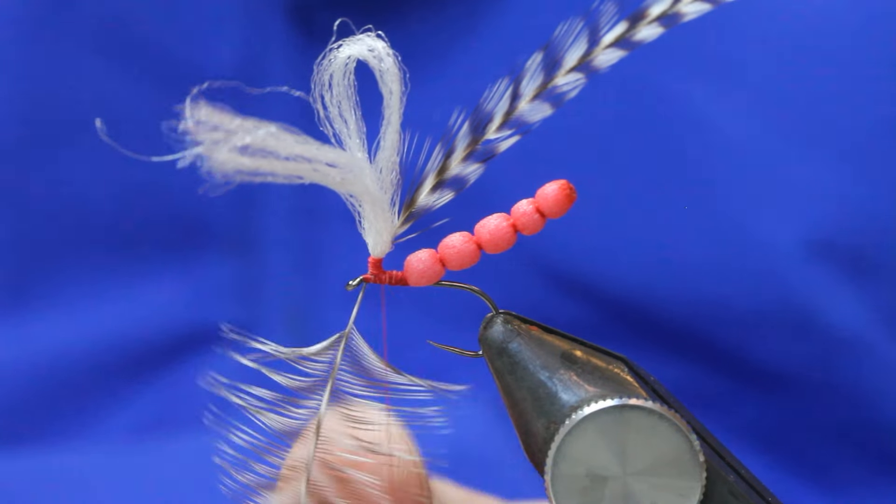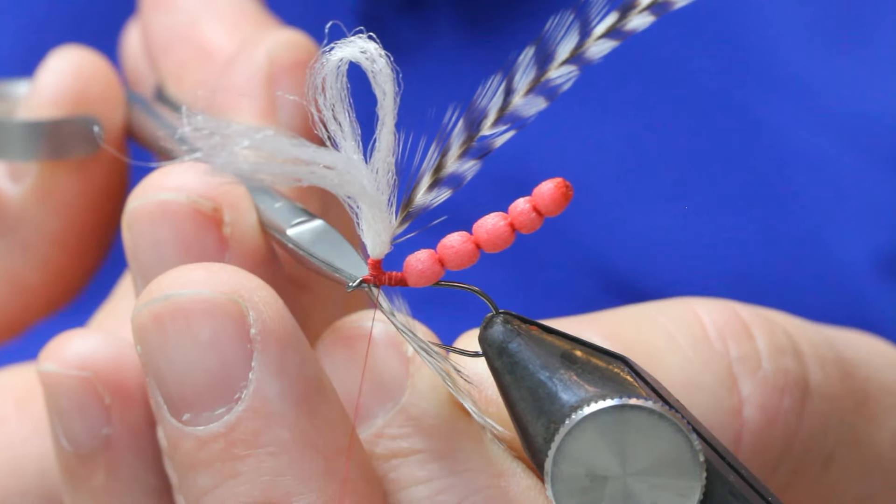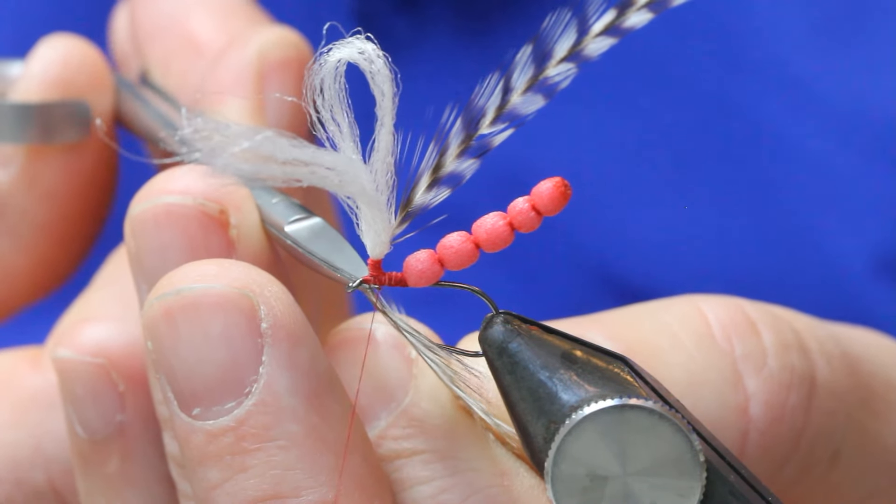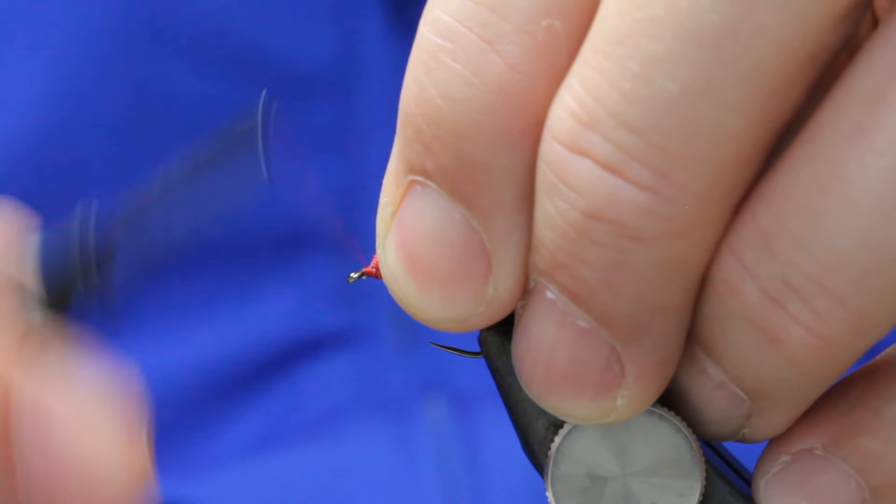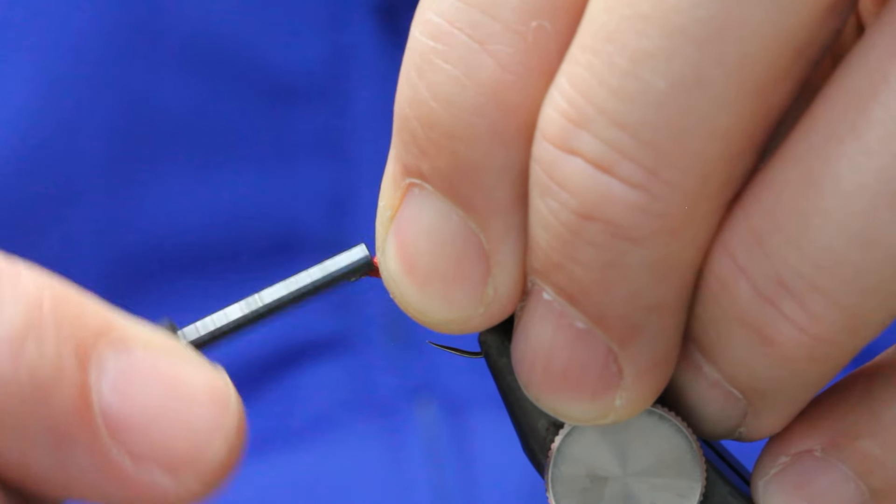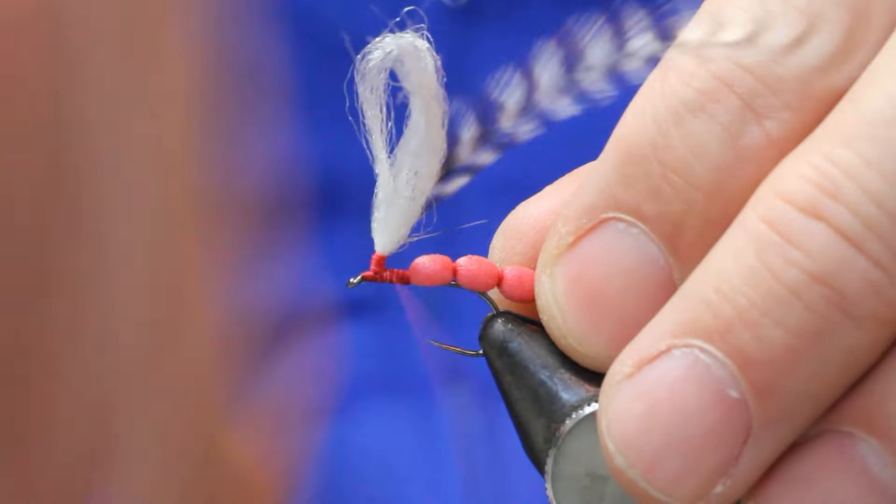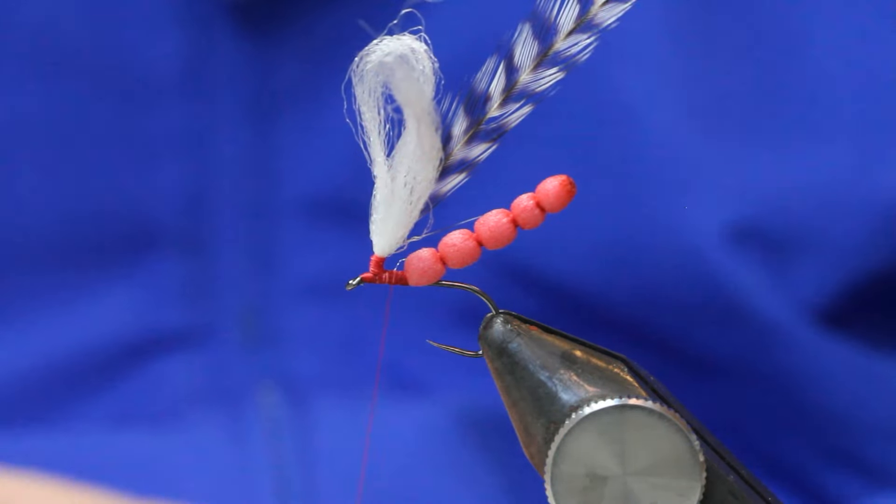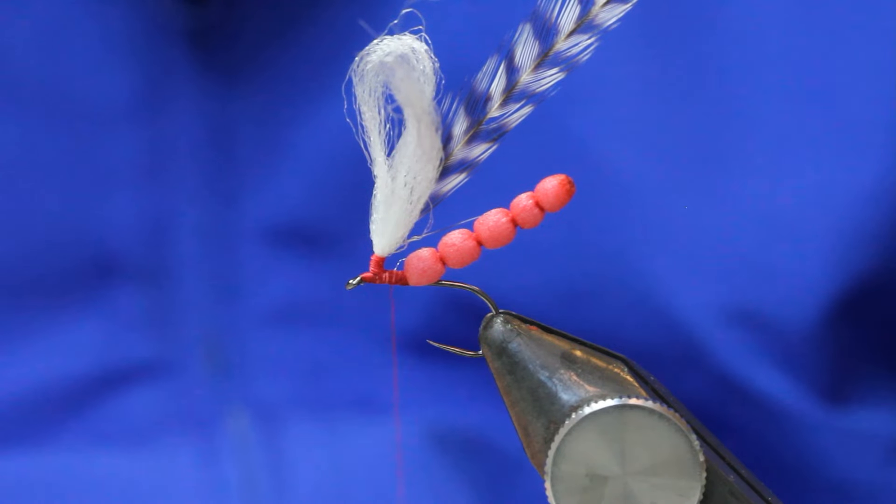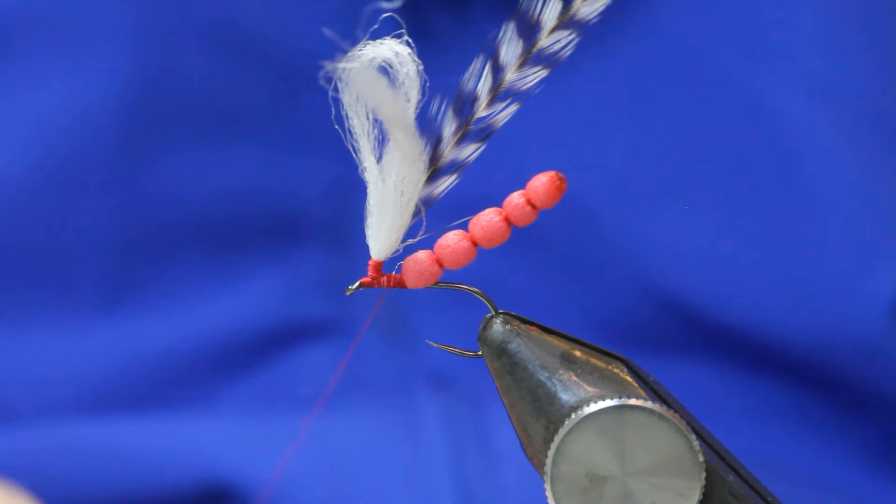Come in with your scissors, take away that stem, tidy up with a couple of thread wraps. Make sure that post is upright. I've then got some red seals fur, really bright. You've got to dub that up and then pull our thread through.